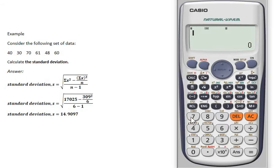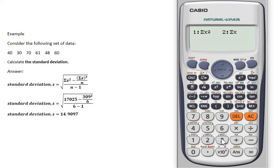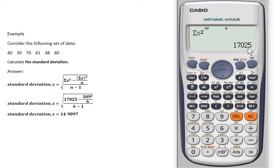Press Shift, press number 1, choose number 3, and choose number 1 for summation of x squared. Press equals to get the value. The summation of x squared is equal to 17,025.